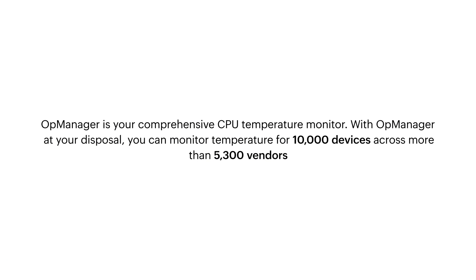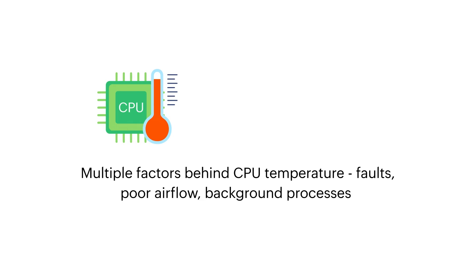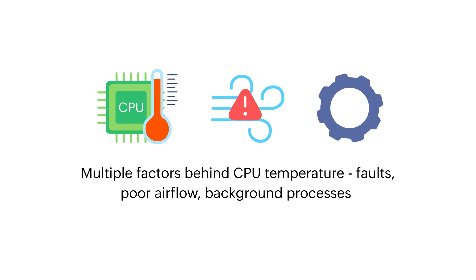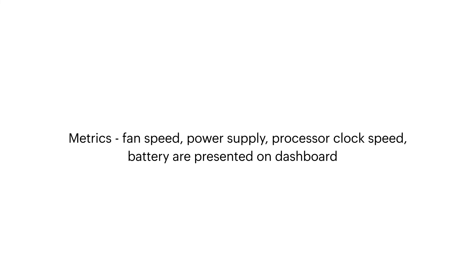UpManager is your comprehensive CPU temperature monitor. With UpManager at your disposal, you can monitor temperature for 10,000 devices across more than 5,300 vendors. Multiple factors can cause a spike in CPU temperature, including hardware faults, poor airflow, and background processes. Pinpointing the exact reason behind a temperature spike is a tedious process. UpManager closely monitors these factors and presents them as metrics on your dashboard.